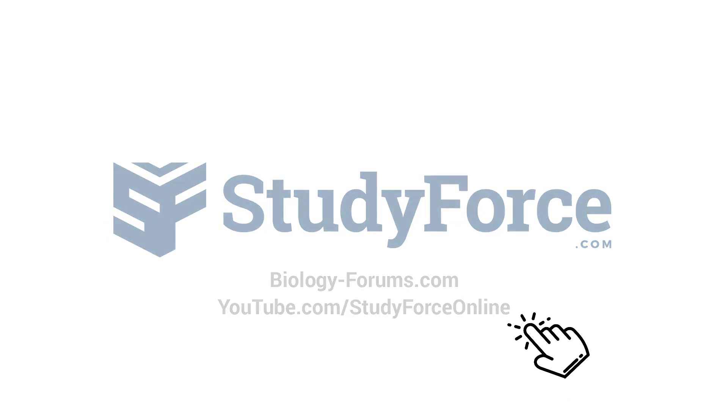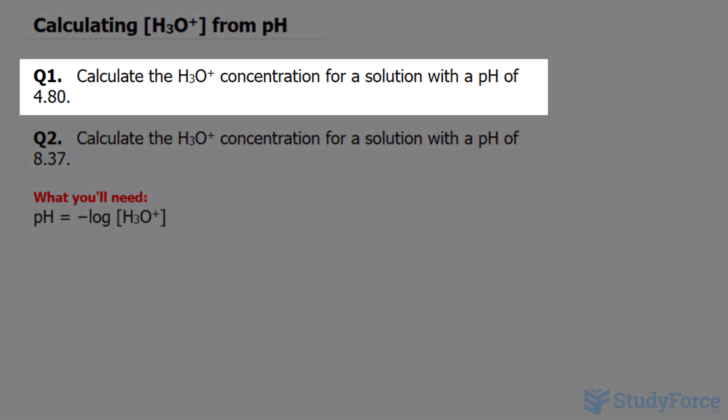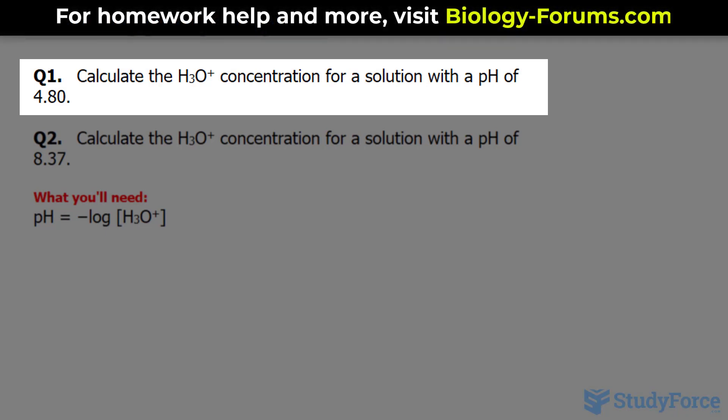In this lesson, I'll show you two quick examples on how to calculate the hydronium concentration from pH. Question 1 reads, calculate the hydronium concentration for a solution with a pH of 4.80.